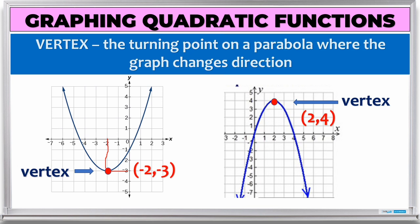Again, we look at x on the horizontal line first — that's 2. Then on the vertical line, that's 4. So our vertex here is 2 and 4.